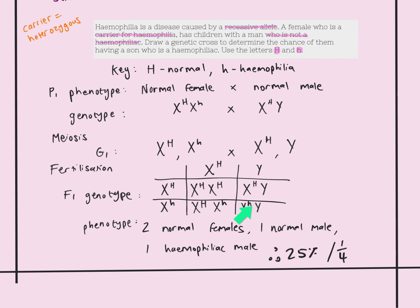Even if the allele were dominant, a male would show it anyway. But for recessive conditions, the key point is that a male only has one X chromosome — all he needs is one allele for the condition and he will show it. A woman with one recessive allele will have it masked by the dominant allele. That is why more men suffer from hemophilia and colorblindness. Colorblindness is treated in exactly the same way — use N for normal vision and small n for colorblind.